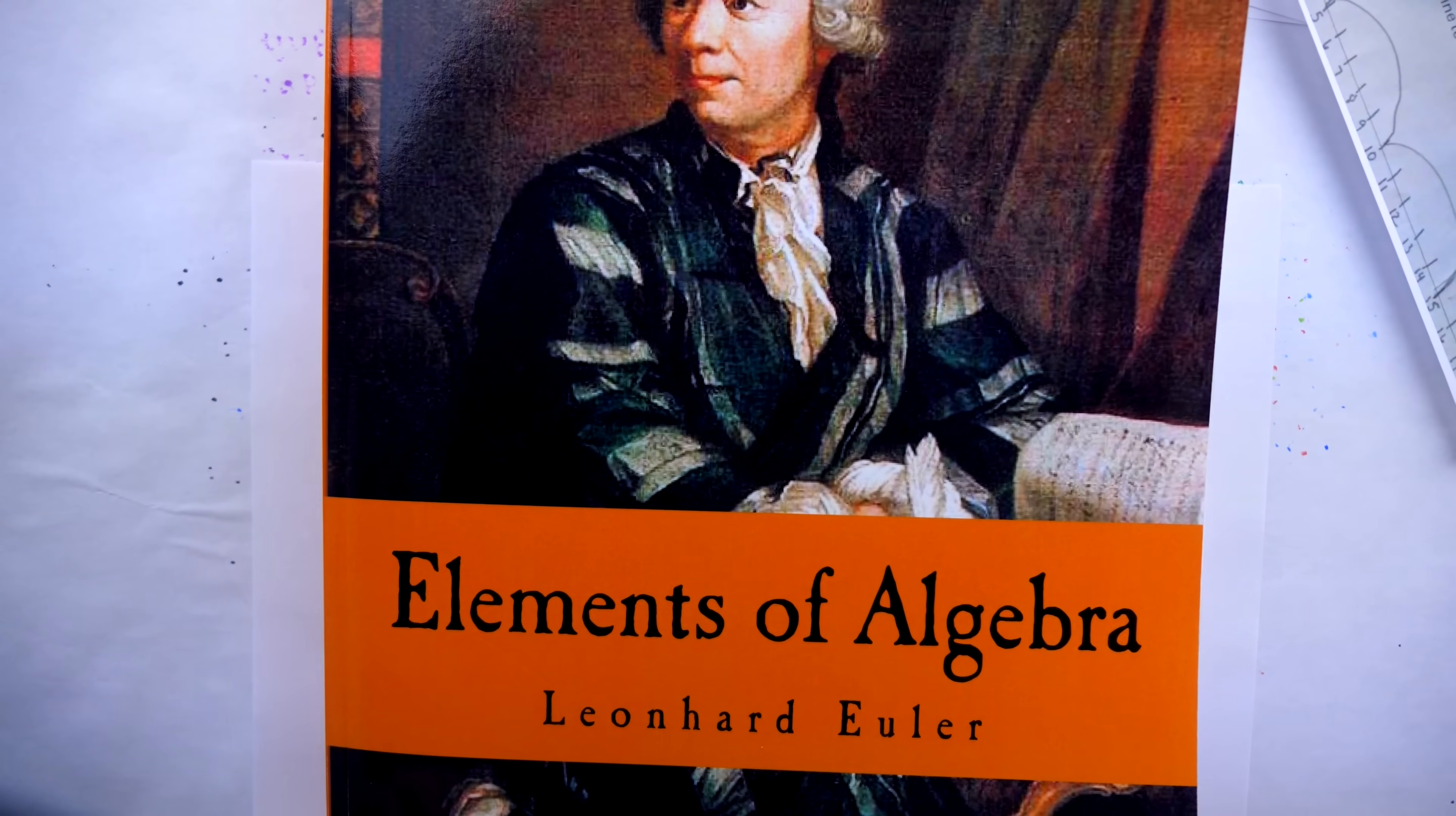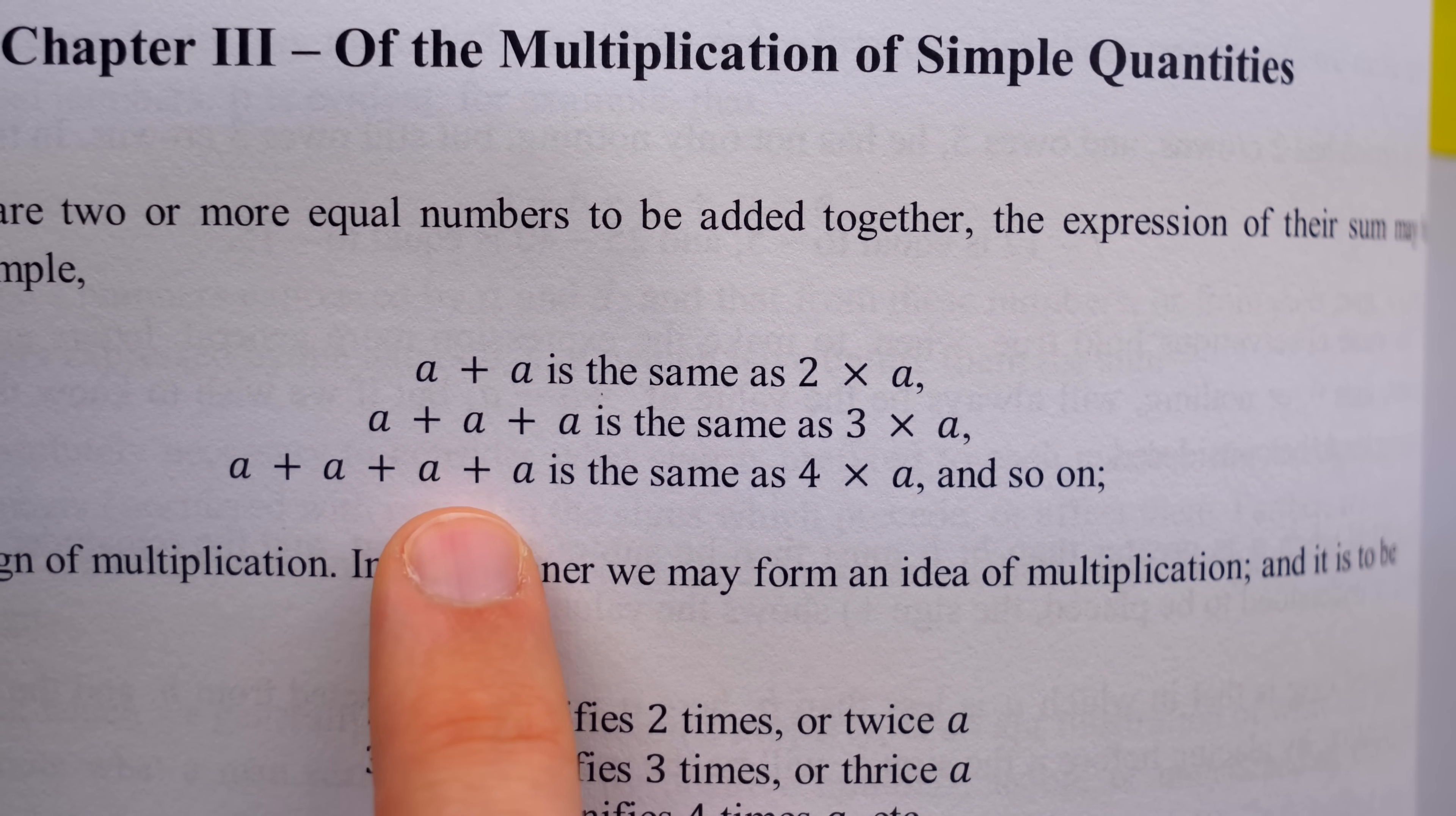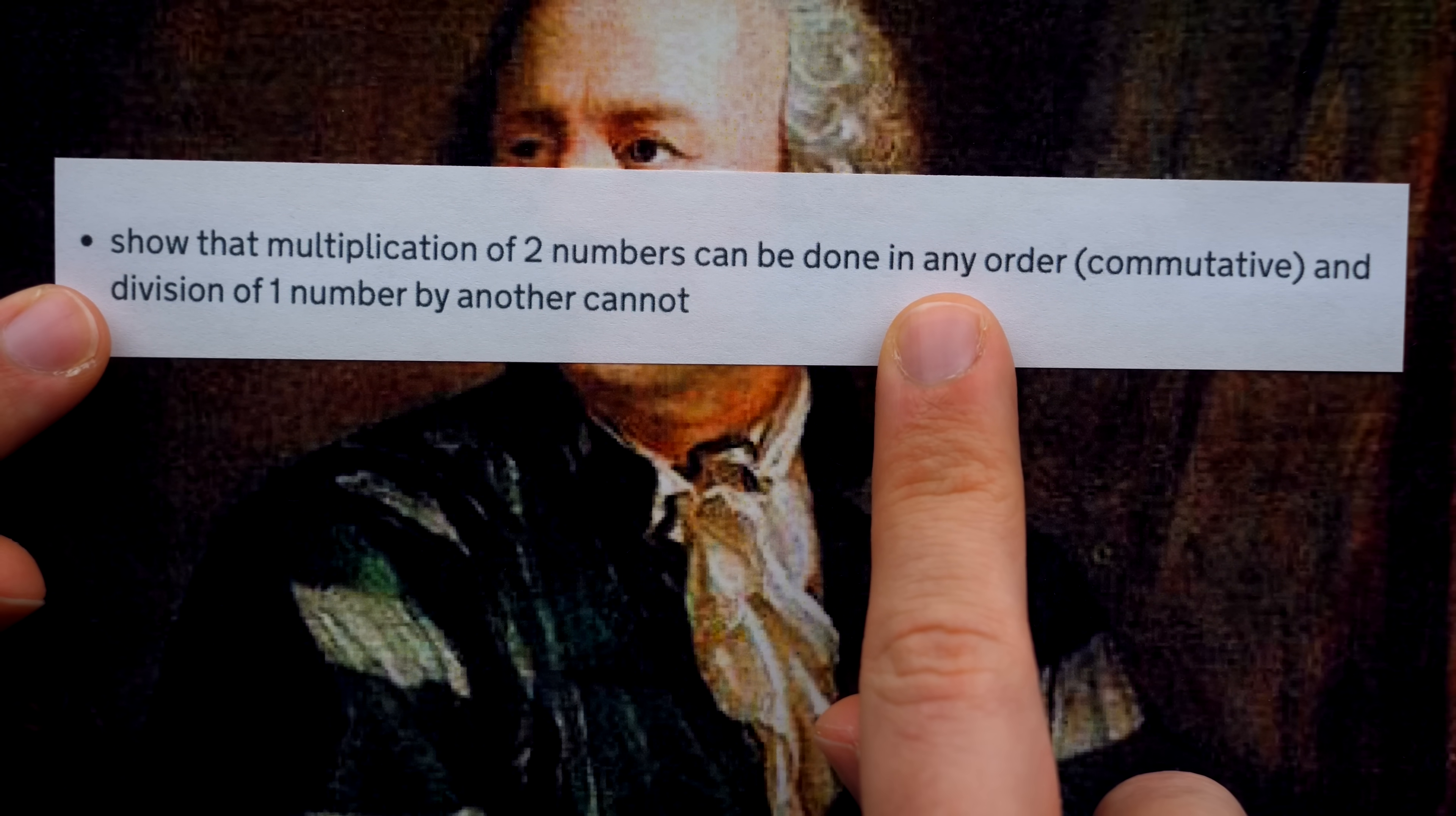And here he says A plus A is the same as two times A. You can see where he's going with this. Four times A, that's four groups of A. So Euler agrees with the teacher. So yeah, that's a pretty thorough demonstration of the precedent. For what it's worth, I'll add the Department of Education in the UK says that students should know that multiplication of two numbers can be done in any order.